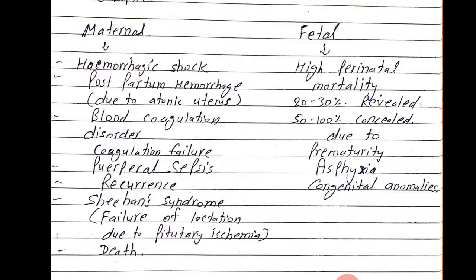Fetal complications: high perinatal mortality. Fetal death rate is greater than 20–30% in the revealed type and 50–100% in the concealed type, due to prematurity, asphyxia, and congenital anomalies.